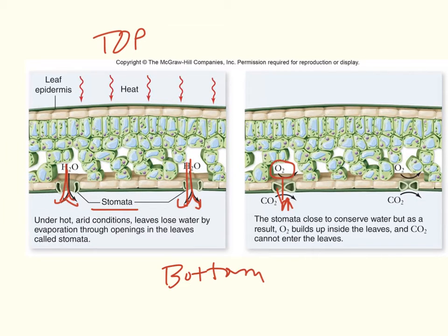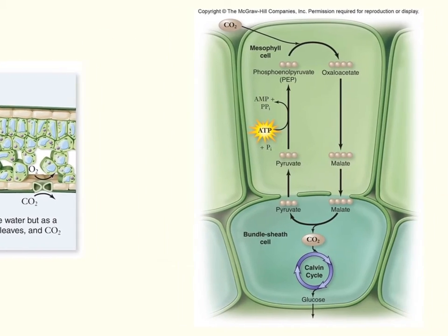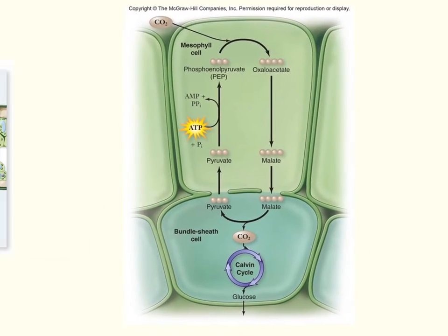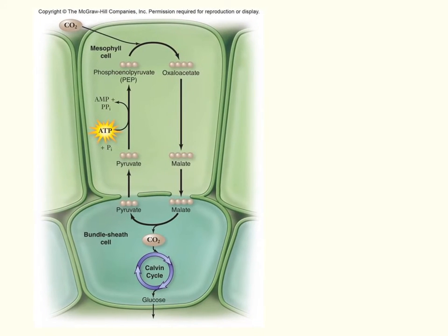Plants living in very hot, arid climates have developed mechanisms to combat this — to retain water, remove excess oxygen, and maximize CO2 in their cells. The first method is used by plants known as C4 plants.